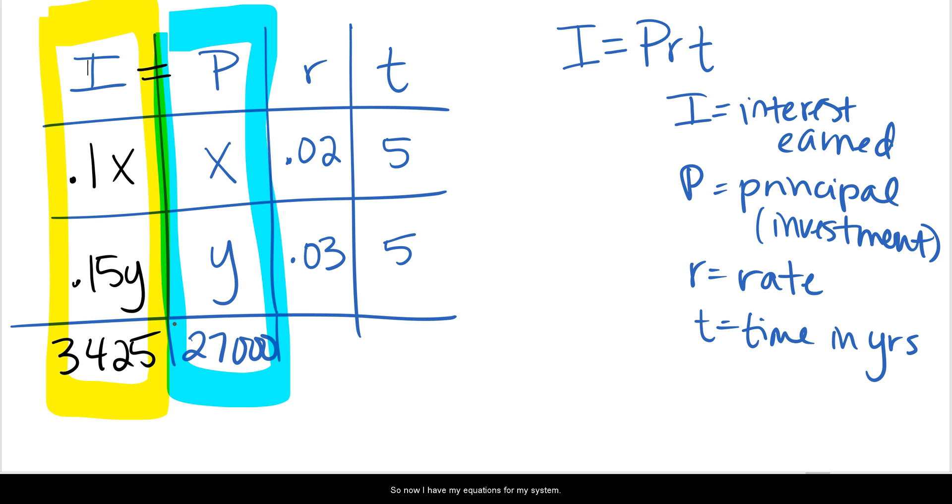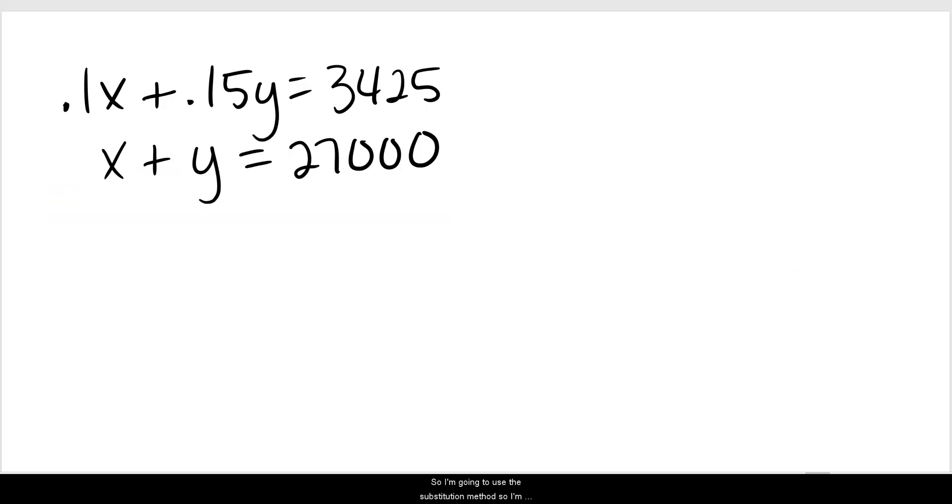So now I have my equations for my system. The yellow equation will be 0.1X plus 0.15Y equals 3,425. Then the blue equation will be X plus Y equals 27,000. Now we'll solve this system of equations. I'm going to use the substitution method. I'm going to take the second equation and solve for X. So if I solve for X, I have to subtract Y on both sides. So I have X equals 27,000 minus Y.